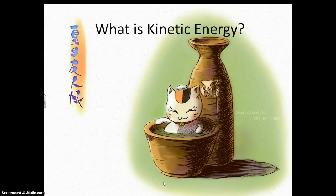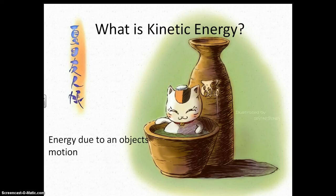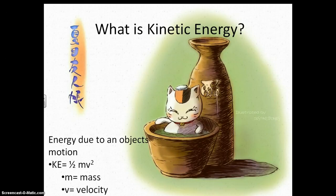Our second form of mechanical energy is kinetic energy. Kinetic energy is based off of a couple of things. First of all, it is the energy due to your motion. KE equals one half mv squared, those two factors being mass and velocity. So kinetic energy is based off of your mass and your speed squared. Kinetic energy and potential energy together make up your mechanical energy, and as long as you don't gain or lose any of those forms, you have conservation of energy.